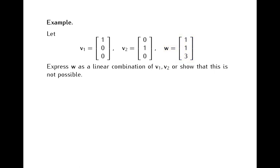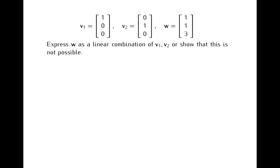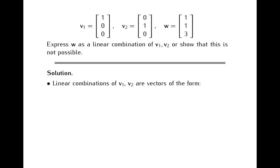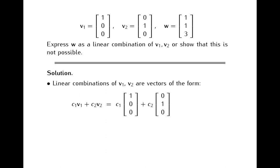In the last segment I showed you that problems of this kind can always be solved by setting up and solving a vector equation, but here we will take a different route. Notice that by definition, linear combinations of v1 and v2 are vectors of the form c1 times v1 plus c2 times v2, where c1 and c2 are some scalars. In other words, every linear combination is obtained by multiplying the first vector (1, 0, 0) by c1, multiplying the second vector (0, 1, 0) by c2, and then adding these products.